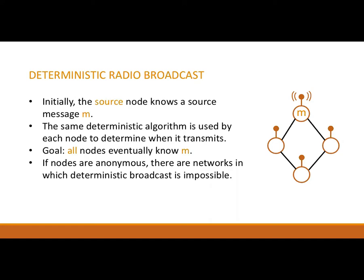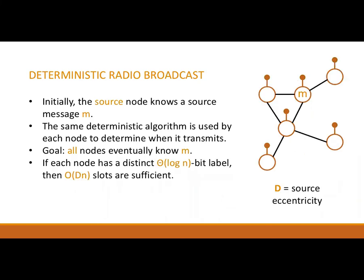When the source node transmits the message M, both neighbours of the source node receive the message. In each subsequent round, they both transmit or neither transmits, since they are performing the same algorithm and have the same history. In either case, the remaining node does not receive the message. If each node has a distinct log N bit identifier or label, then a round-robin schedule completes within O(N) slots, where D is the source eccentricity — the maximum distance from the source to any node.